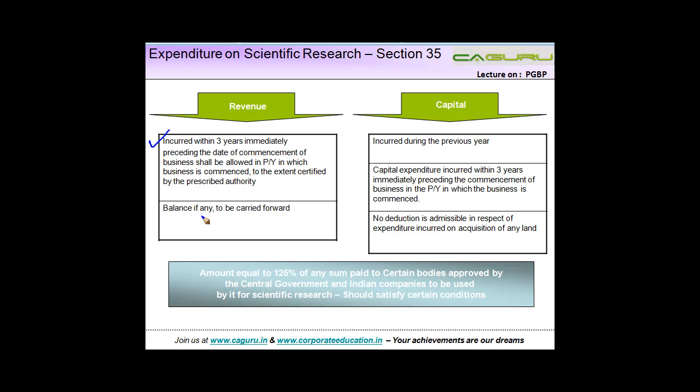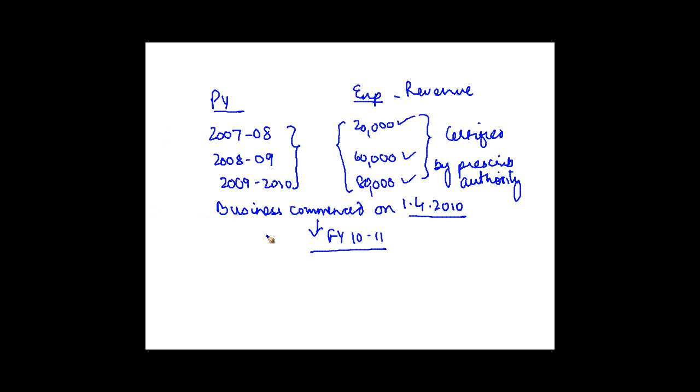Balance, if any, to be carried forward. Suppose in the first year you don't have sufficient income to set it off. Then let's say in this example, suppose your income during financial year 10-11 was only 150,000. What is the total of this? Total is 160,000, so 10,000 will be carried forward.